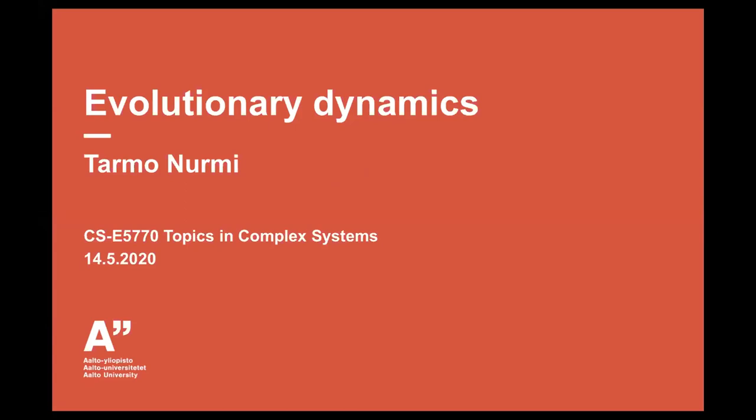So my topic is about evolutionary dynamics, and this is somehow similar to self-organized criticality, or at least has some same ideas. And we heard about the Bak-Sneppen model, which is one of these evolutionary models. I won't be talking about that model since we already heard about it, but you can also think of it in this context.